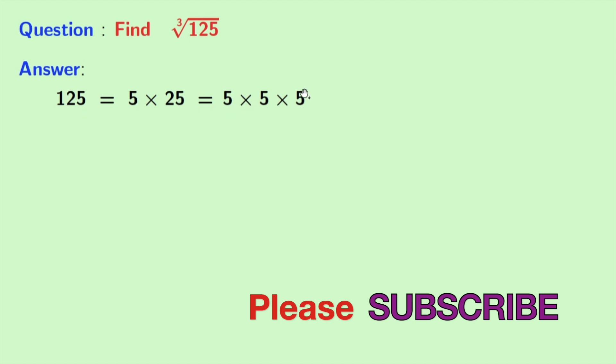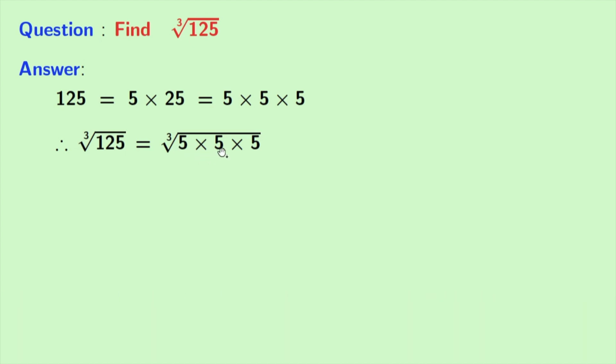Now taking cube root on both sides, we have cube root of 125 is equal to cube root of 5 times 5 times 5. Now we know that cube root can be written as power 1 by 3.